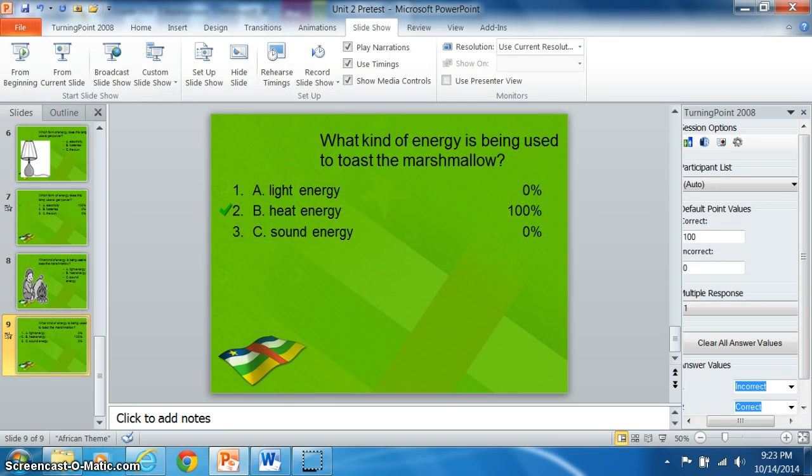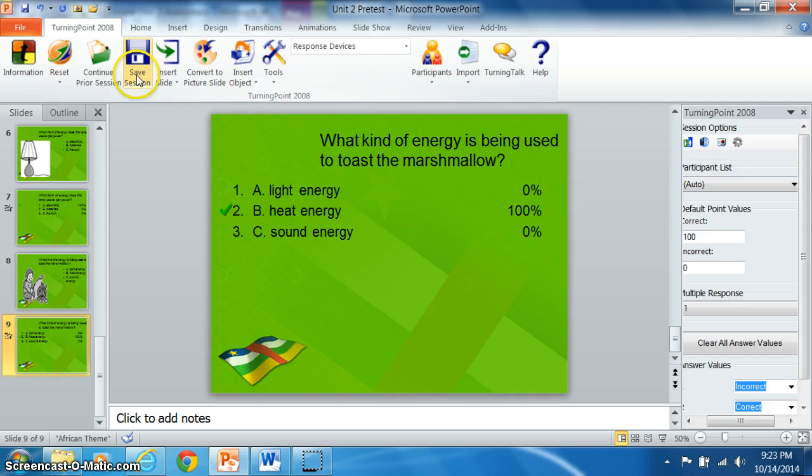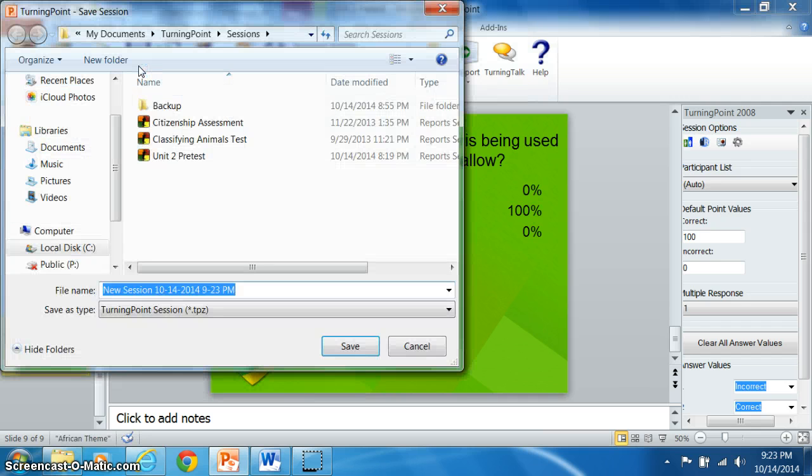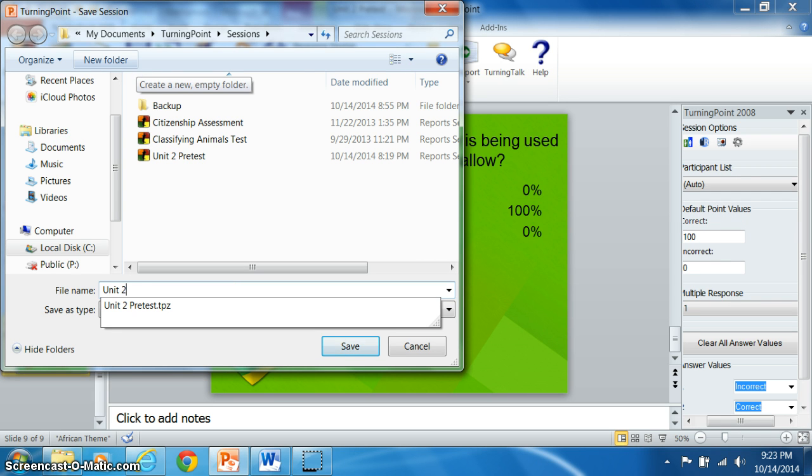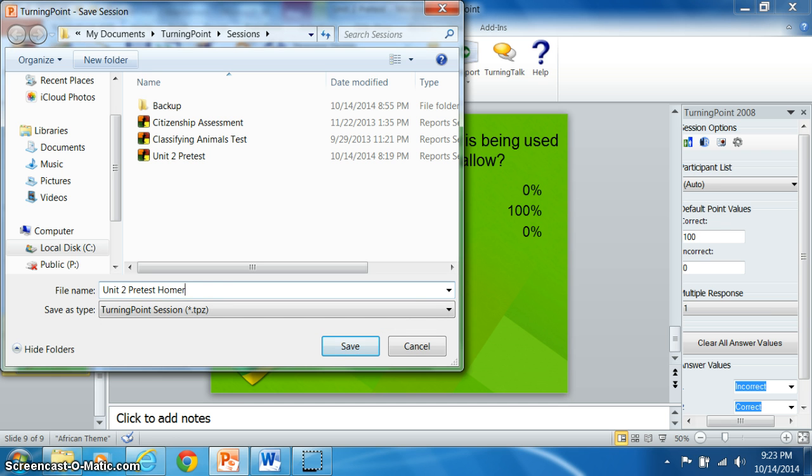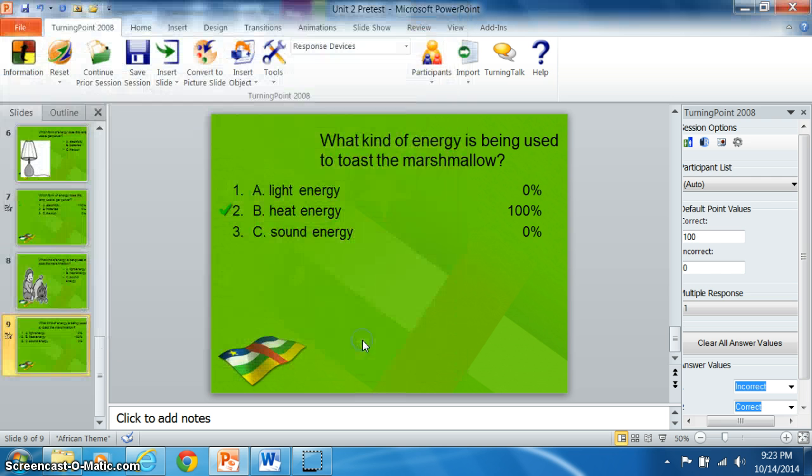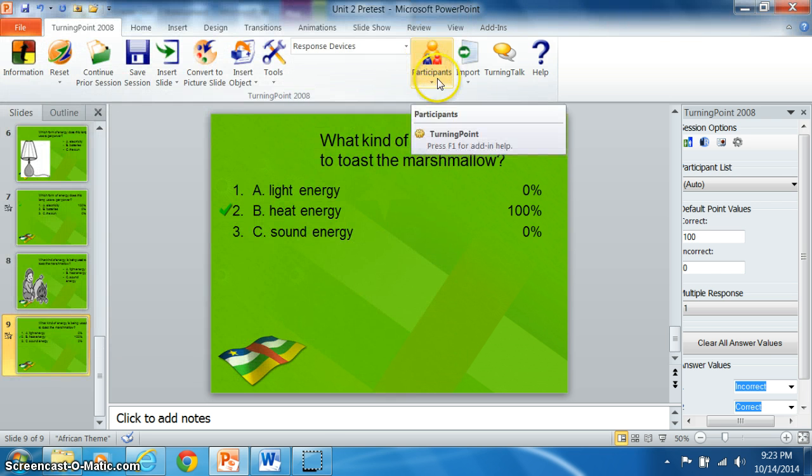We come out. You go ahead and you save. Save the current session. Save it as Unit 2 pre-test homeroom. Save it.